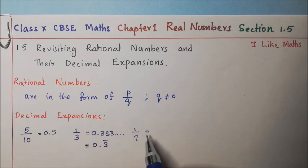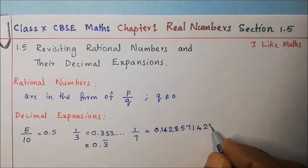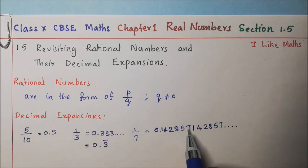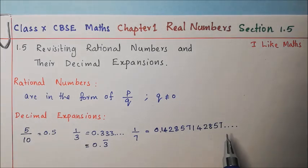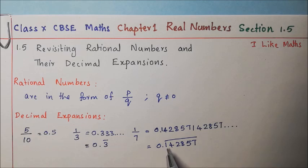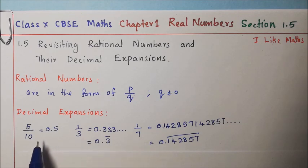Next, 1 by 7. If we divide 1 by 7 we get 0.142857 142857 — this particular set of digits repeats. This is a non-terminating decimal expansion and can be written as 0.142857 bar, indicating that these digits repeat endlessly. So we have written the decimal expansions of three rational numbers and found two types.